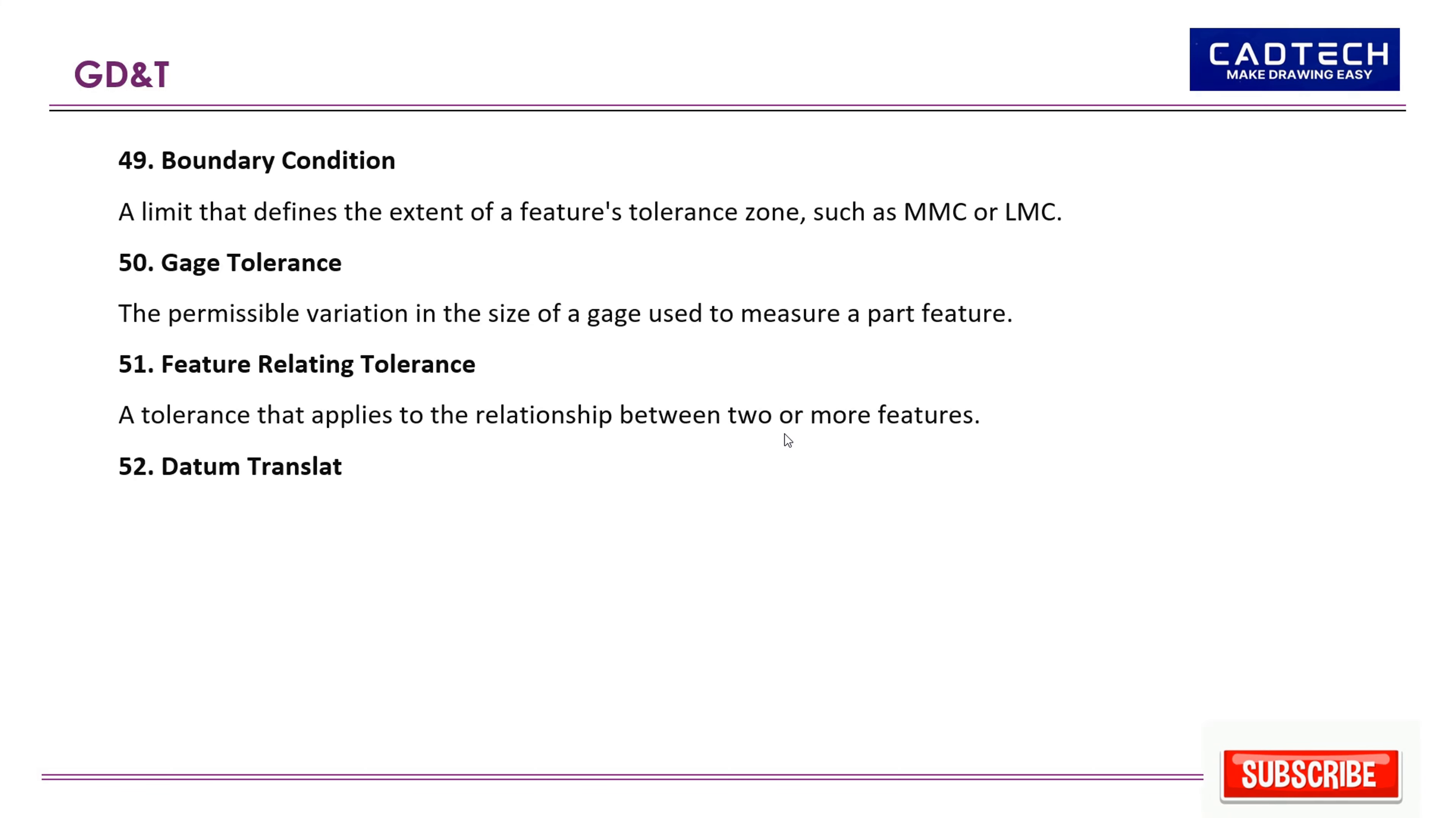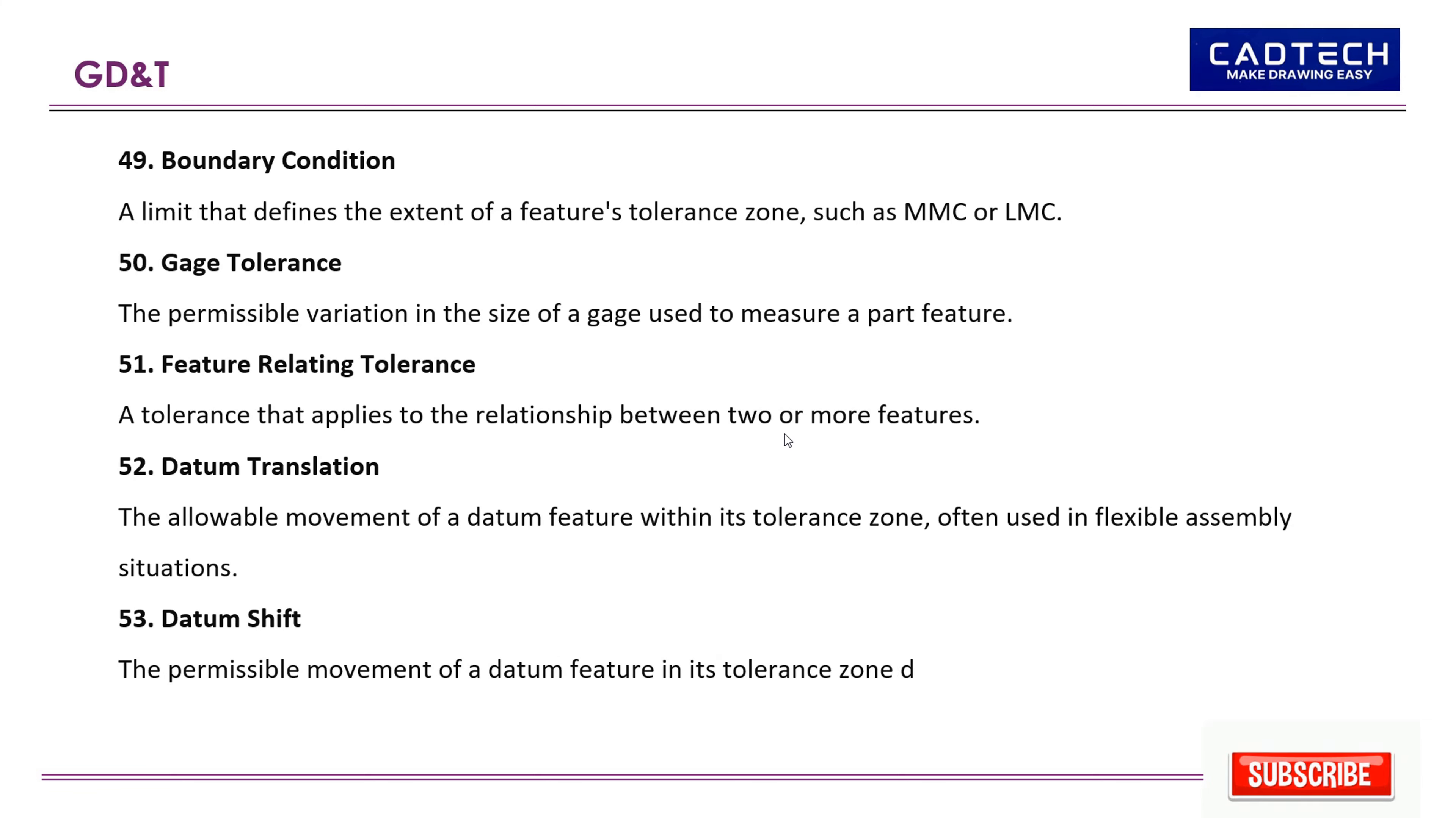52. Datum translation: The allowable movement of a datum feature within its tolerance zone, often used in flexible assembly situations. 53. Datum shift: The permissible movement of a datum feature in its tolerance zone during inspection or measurement.